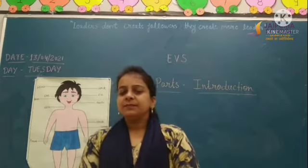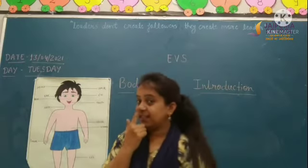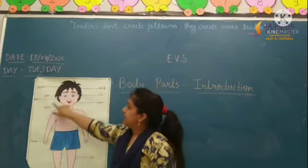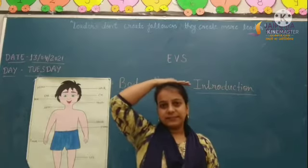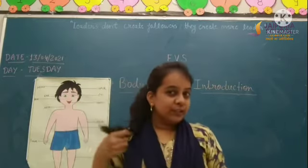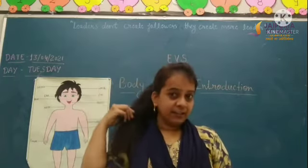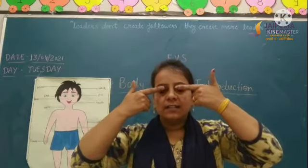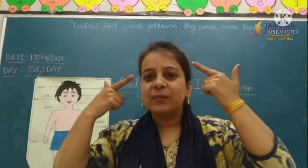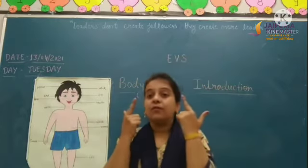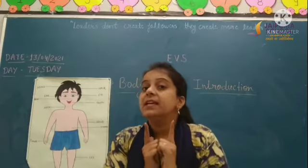Now tell me, where is your nose? This is our nose. What is this? This is head. What is this? These are hairs. Head, hair, nose. These are eyes. Open, close. With the help of our eyes, we see. And with the help of our nose, we smell.